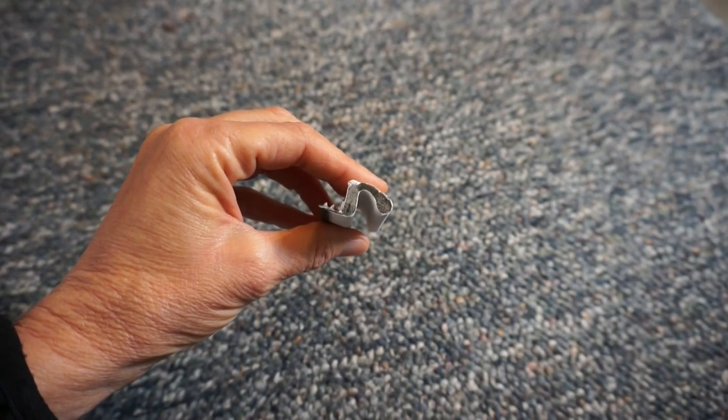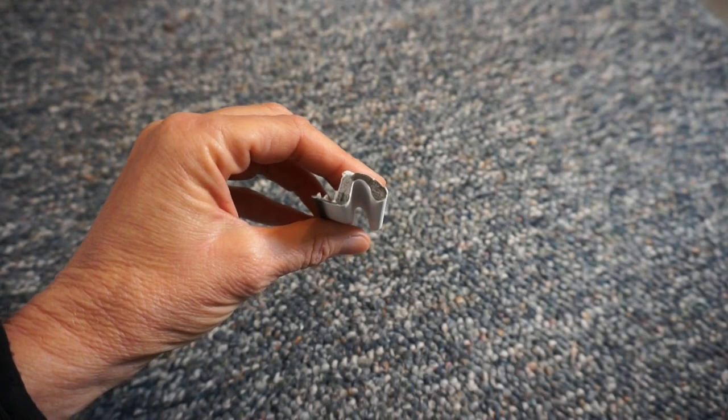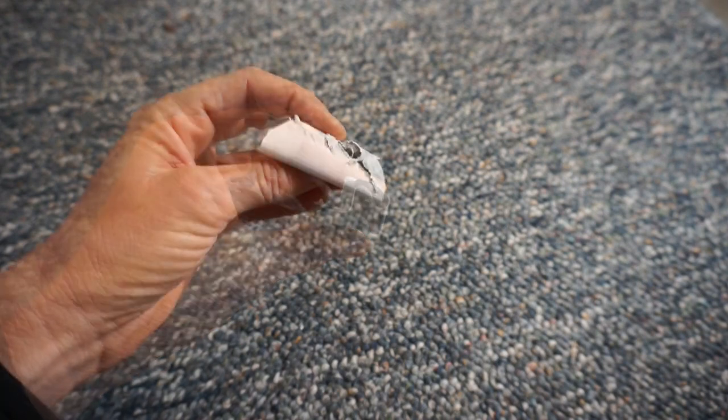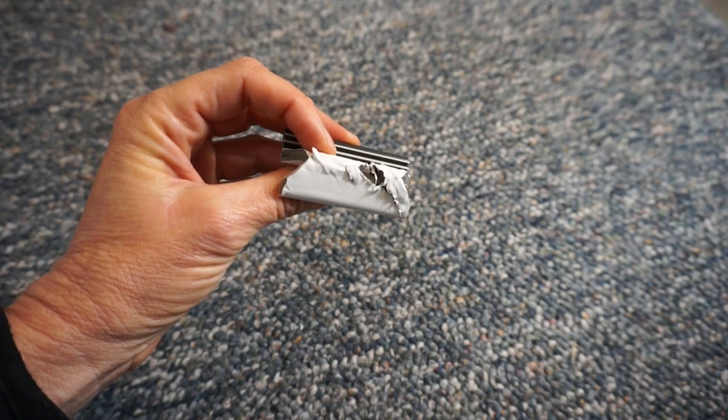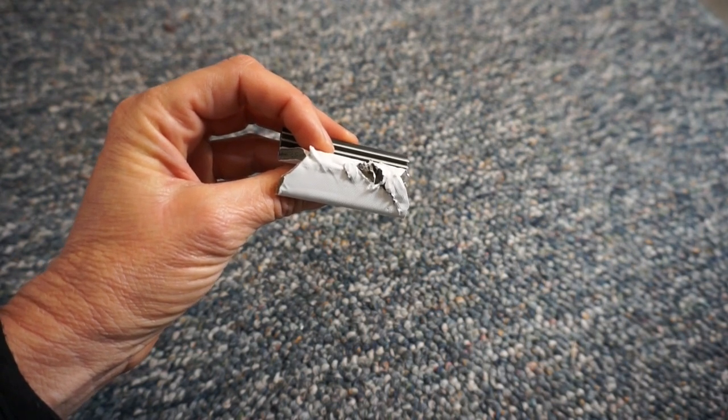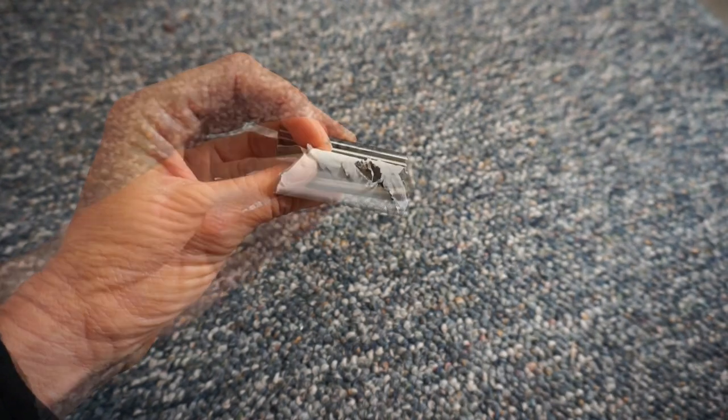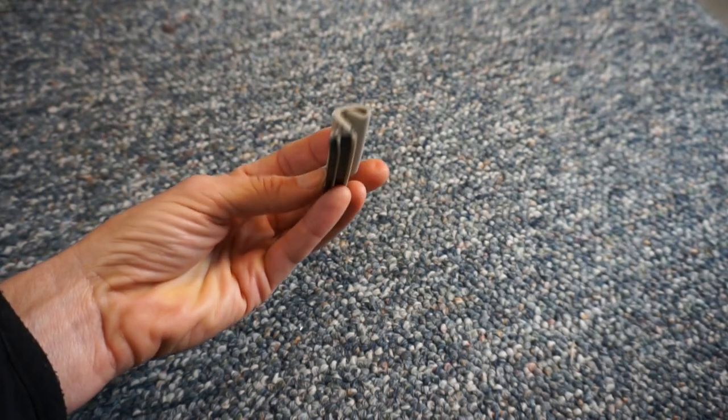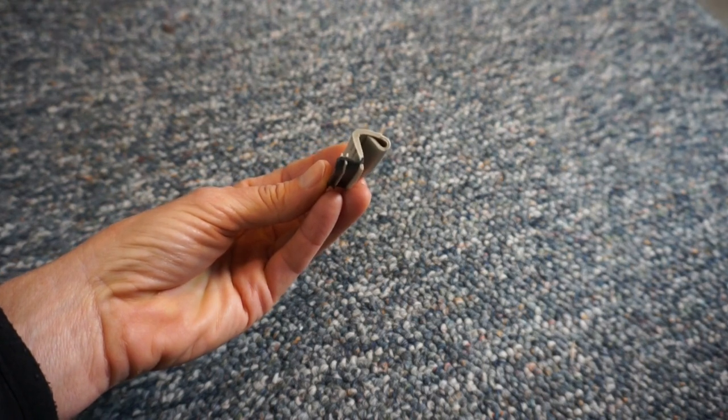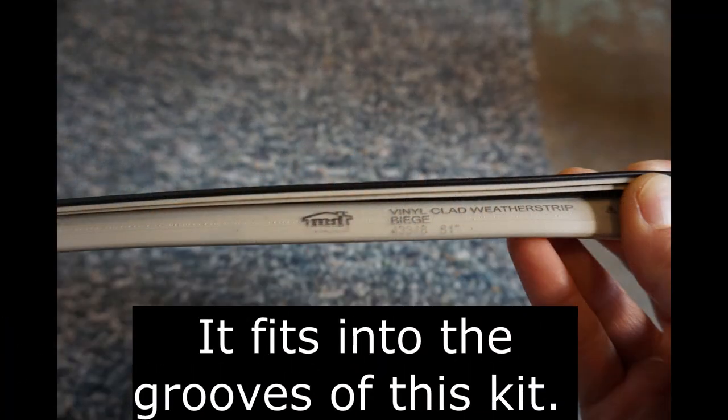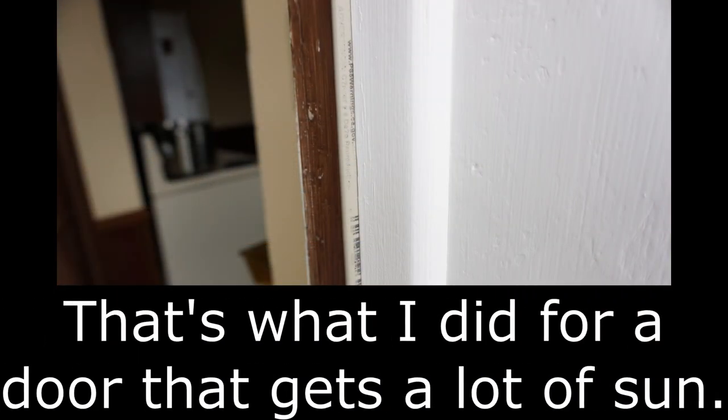The weatherstrip that comes with the kit is vinyl covering foam. It's not very durable and likely will not hold up well in a location that gets a lot of heat and sun. MD makes a solid vinyl weatherstrip that fits into the groove of this kit. I haven't been able to find an MD weatherstripping kit with this type of weatherstripping in it. You might consider upgrading the weatherstripping.